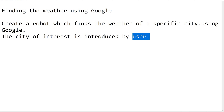So now let us go back to our question — we have created a robot which finds the weather of a specific city using Google. We have used multiple input and output methods. I hope this session is useful and helpful for better understanding UI automation. Thank you so much for your support. We'll meet in the next videos — until then, keep learning, keep watching, and happy automation. Bye bye!